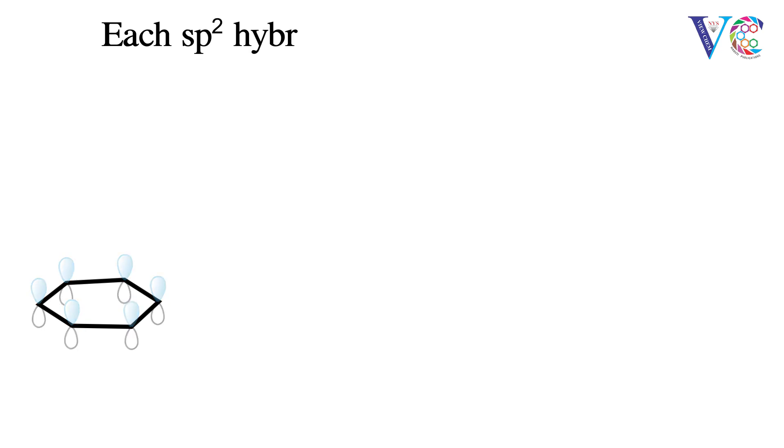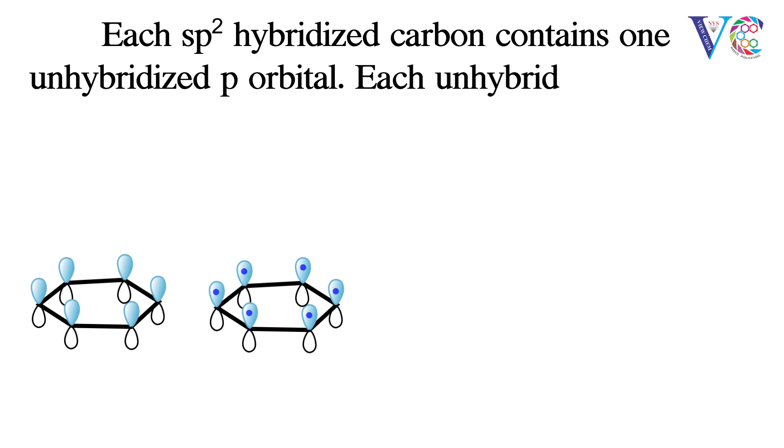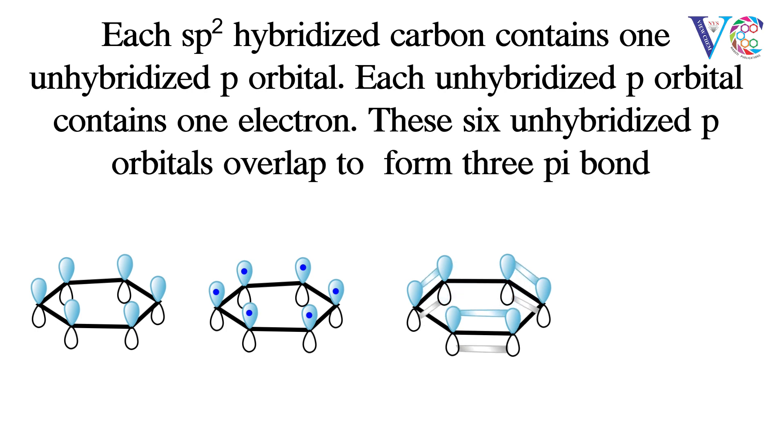Each sp2 hybridized carbon atom contains one unhybridized p orbital. Each unhybridized p orbital contains one electron. These six unhybridized p orbitals overlap to form three pi bonds.